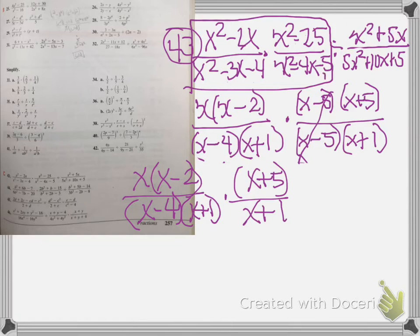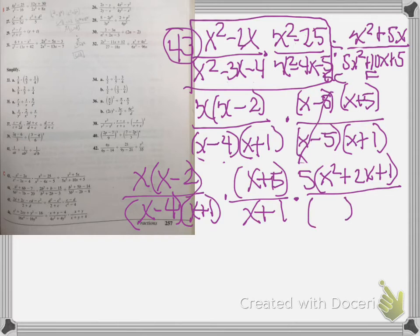Now I'm going to do my keep, change, flip. So I'm going to keep this one, I'm going to change my division to multiplication, then I'm going to flip. And I'm going to factor out why I flip, so I can pull a 5 out of that, and that will leave me with x squared plus 2x plus 1 over... And I can pull an x out, x plus 5.